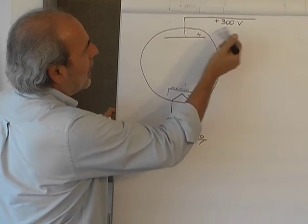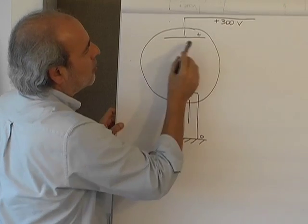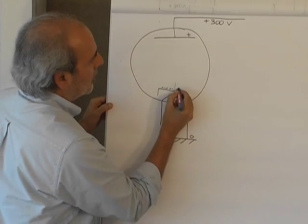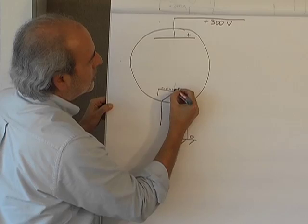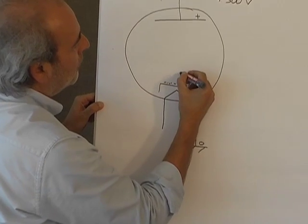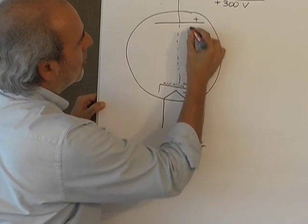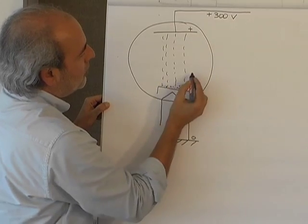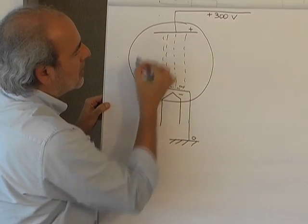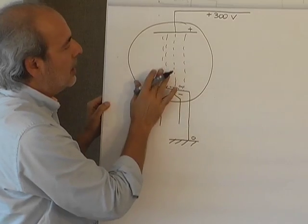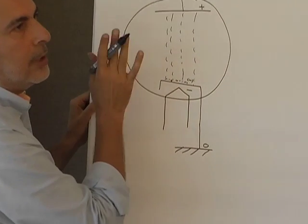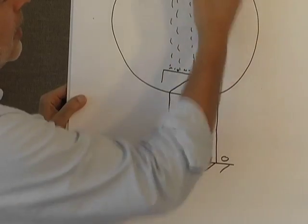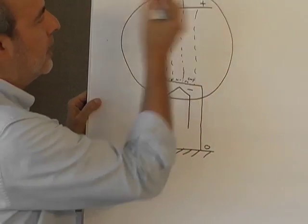When we apply this plus 300 volts to the anode, the negatively charged electrons start flowing from the cathode to the anode. And because there is vacuum inside it, they don't encounter any oxygen, nitrogen or water vapor molecules during their travel from the cathode to the anode.